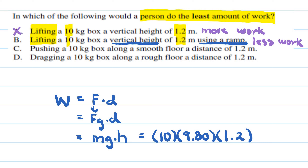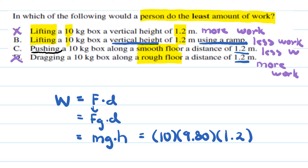We can eliminate option A. Looking at options C and D, we're pushing and dragging a 10 kilogram box the same distance of 1.2 meters. The key difference is a smooth floor versus a rough floor — the smooth floor means less work, the rough floor means more work, so we eliminate option D. Comparing options B and C, pushing along a smooth floor requires less effort than lifting, so option C requires the least amount of work.